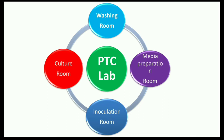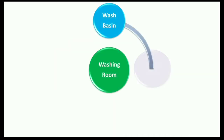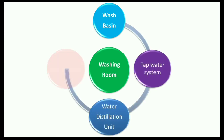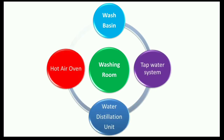The first room is the washing room. In the washing room, we have a wash basin, tap water system, water distillation unit, and a hot air oven.